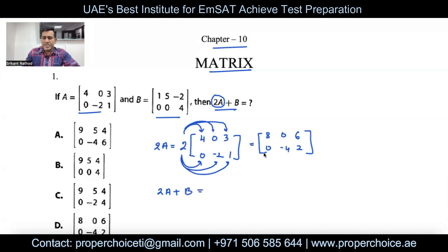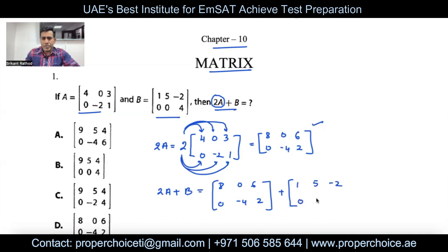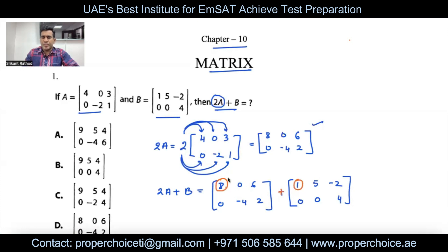Let me write the matrix 2A: it is 8, 0, 6, 0, negative 4, and 2. Now add with matrix B, which is 1, 5, negative 2, 0, 0, 4. Adding matrices means combining the numbers at the same position in both matrices. For example, we add 8 plus 1 because those are at the same position in each matrix.